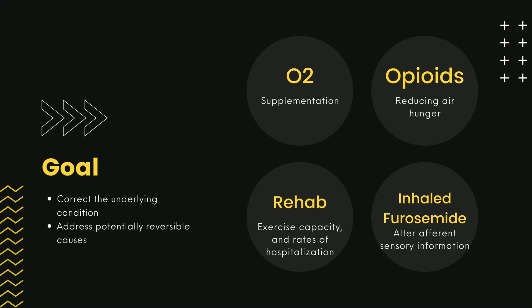Lastly, treatment. The first goal is to correct the underlying condition and address potentially reversible causes with appropriate treatment for the particular condition. If relief of dyspnea with treatment of the underlying condition is not fully possible, an effort is made to lessen the intensity of the symptoms and its effects on the patient's quality of life. Supplemental oxygen should be administered if the resting oxygen saturation is less than or equal to 88%, or if the patient's saturation drops to these levels with activity or sleep. Pulmonary rehabilitation programs have demonstrated positive effects on dyspnea, exercise capacity, and rates of hospitalization. Opioids have been shown to reduce symptoms of dyspnea, largely through reducing air hunger, thus likely suppressing respiratory drive and influencing cortical activity.